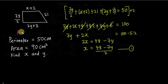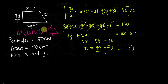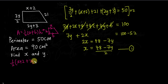Now I'll do the same thing for area. You need to understand the area of a trapezium: it's half times (a + b) multiplied by the height. In case you have no idea — if you have a trapezium, a and b are the two parallel sides and h is the perpendicular height. So applying this: half times (x + 2 + 2y + 3), multiplied by the height which is 3y over 2, equals 90.